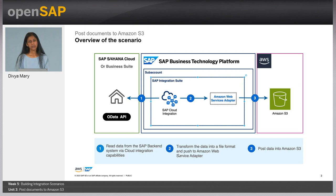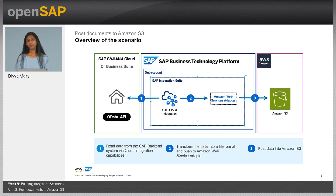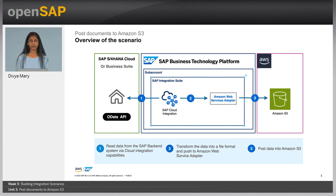So let's zoom in into the sample scenario. Many times you would have use cases where you want to connect to SAP applications, whether on cloud or on-prem, connect and get the data from the SAP applications, convert it into a file format of your choice, and post it into Amazon S3 or any object store. To build such a use case, you can use the SAP Integration Suite, which is the EIPaaS solution available in SAP Business Technology Platform.